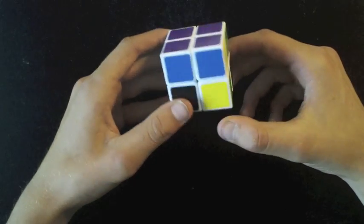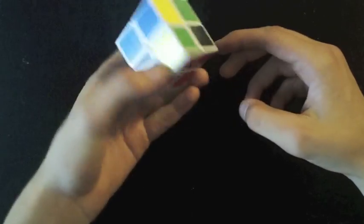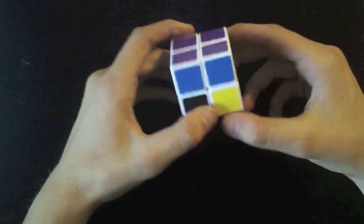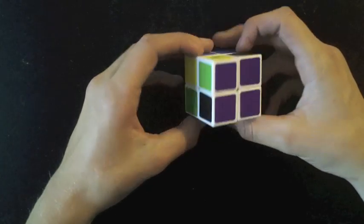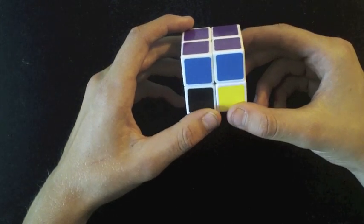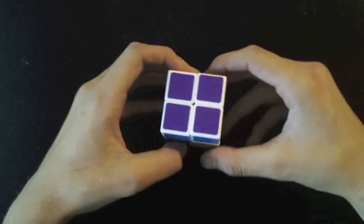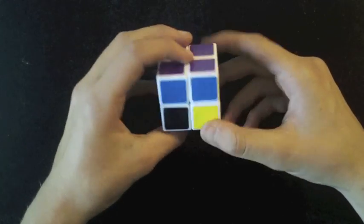And now what we're going to do is PLLs, which is permuting all the other layers. There are 6 PLLs in total that you have to memorize, and the first one is probably the most common one that you're going to go through, and it's when it's like this.